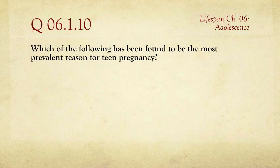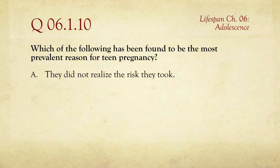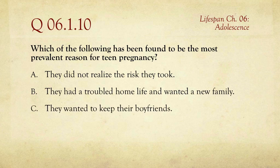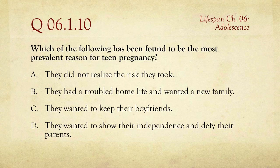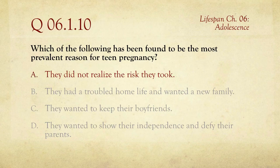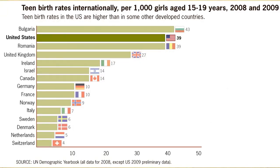Question number ten: which of the following has been found to be the most prevalent reason for teen pregnancy? The choices are: they did not realize the risk they took; they had a troubled home life and wanted a new family; they wanted to keep their boyfriend or girlfriend; or they wanted to show independence and defy their parents. The correct answer is they just didn't know what they were doing — they didn't realize that having sex might result in pregnancy. The U.S. has a lot of pregnant teenagers compared to Switzerland, which has about one-eighth to one-tenth of our rate.